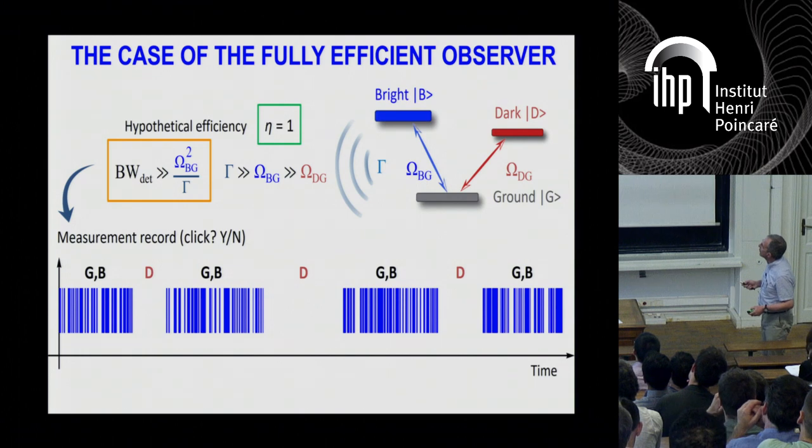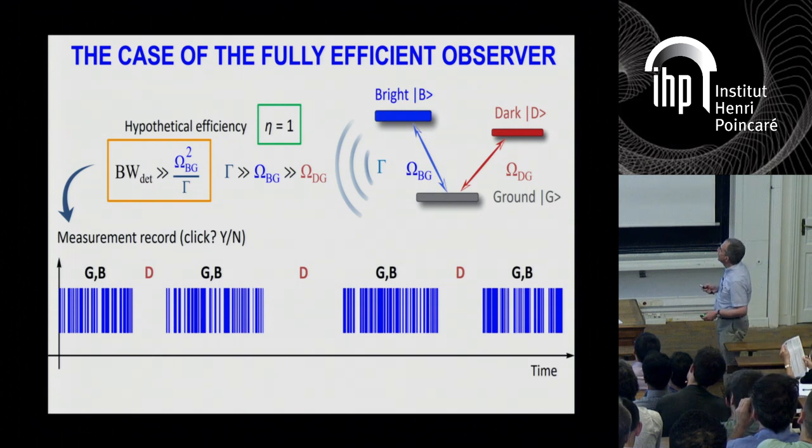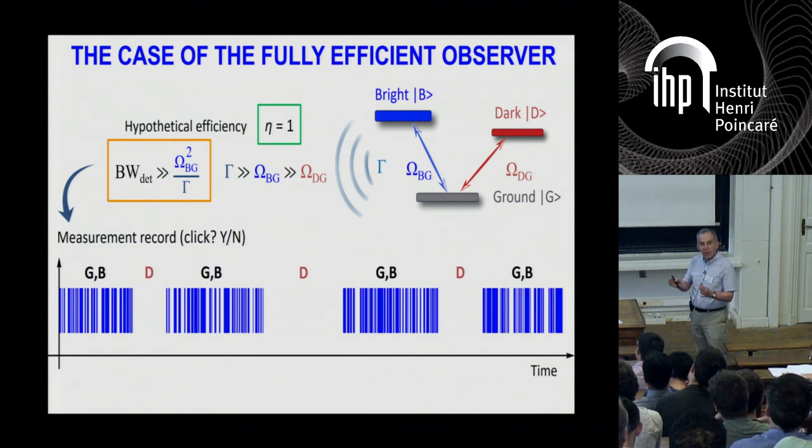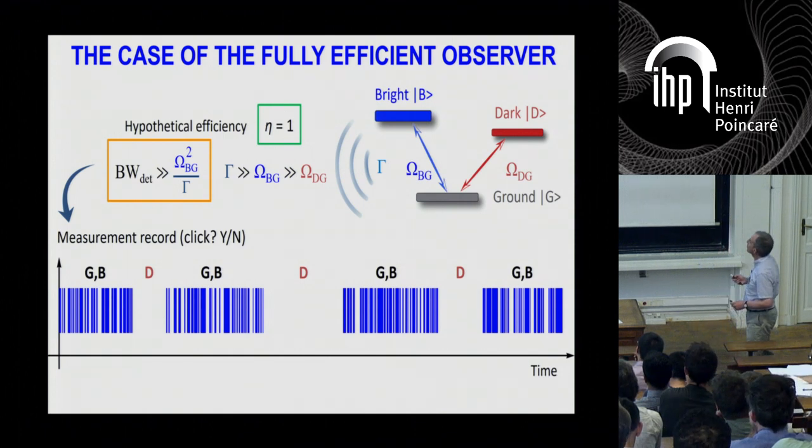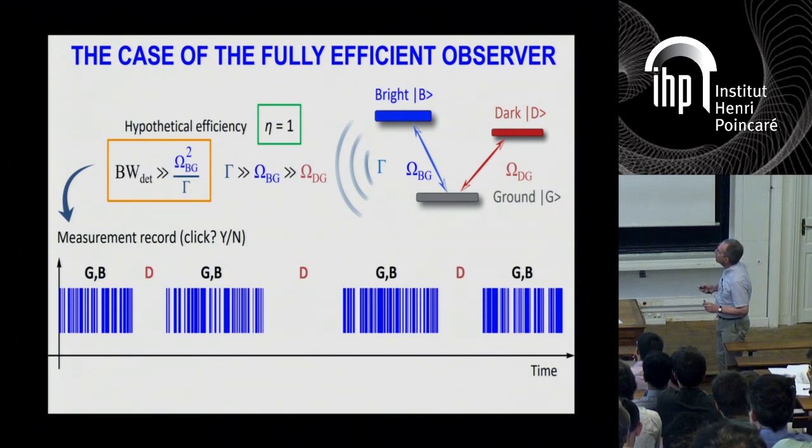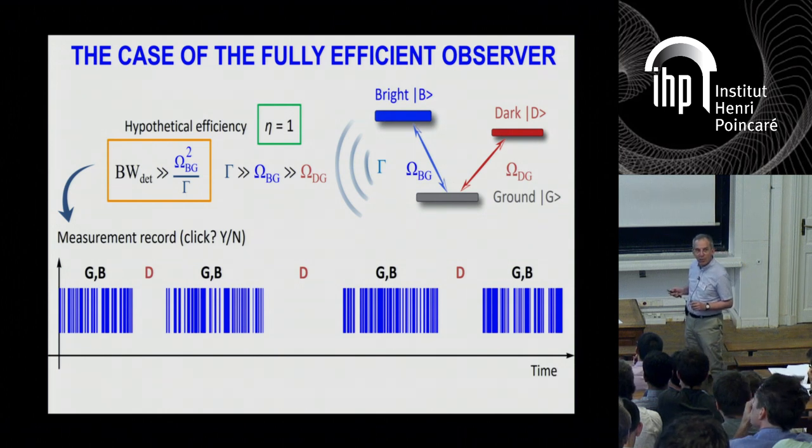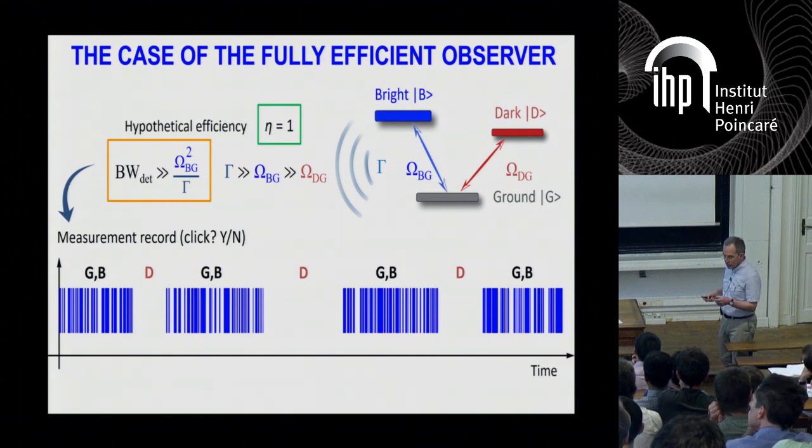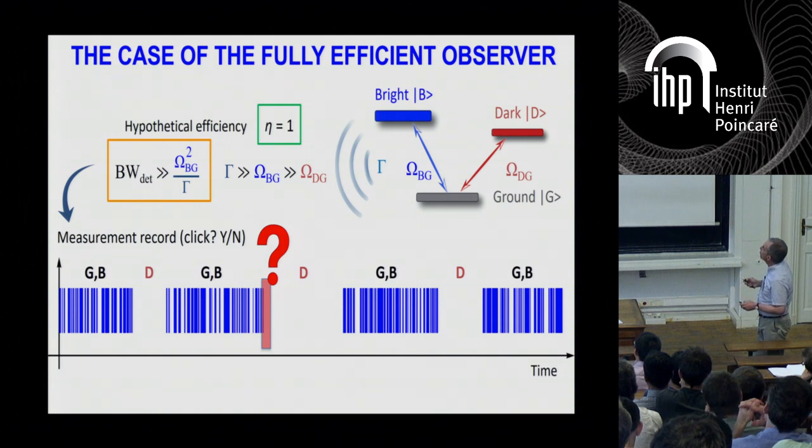And what will you observe? Well, you observe a series of clicks, very well resolved clicks, which occur in a somewhat Poisson fashion. But this series of clicks will be interrupted by this dark period, which you interpret as the system going to the dark state. So remember, the jumps are not between the individual clicks. The jumps are in between the series of Poisson distributed clicks and this large lull period where you see no clicks.